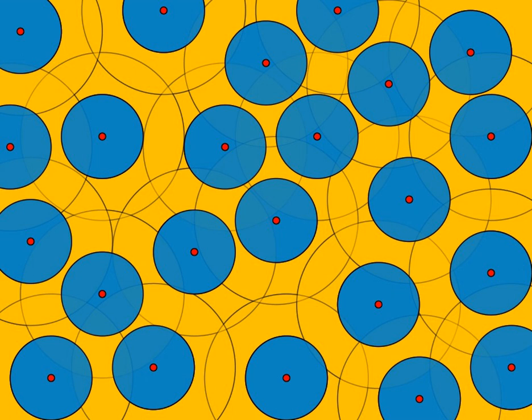They include the point sets of lattices, Penrose tilings, and the Minkowski sums of these sets with finite sets. The Voronoi cells of symmetric Delone sets form space-filling polyhedra called plesihedra.